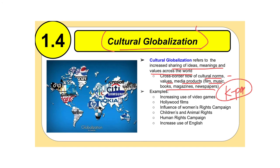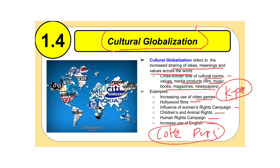Other examples of cultural globalization include the increased use of video games, Hollywood films being popular across the globe, the influence of women's rights campaigns globally, children's and animal rights campaigns, human rights campaigns, and the increasing use of the English language. Also, the global recognition of brands like Coke, Pepsi, and McDonald's — people recognize these symbols everywhere. These are all cultural globalization efforts, and clearly our world is becoming much smaller, requiring nations to learn how to work together and increase globalization efforts.